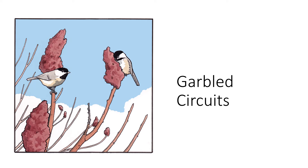Hi! I'm going to talk about garbled circuits and give a basic explanation of what they are. Garbled circuits are a useful primitive for doing secure two-party computation. One context for secure two-party computation is to have a client and a server communicating with one another so the client can get some computation done on their input without having to reveal what their input is.